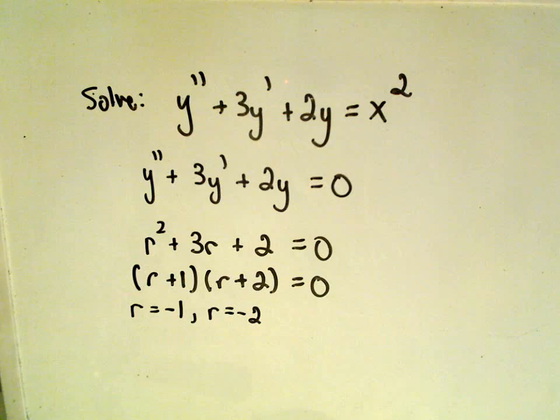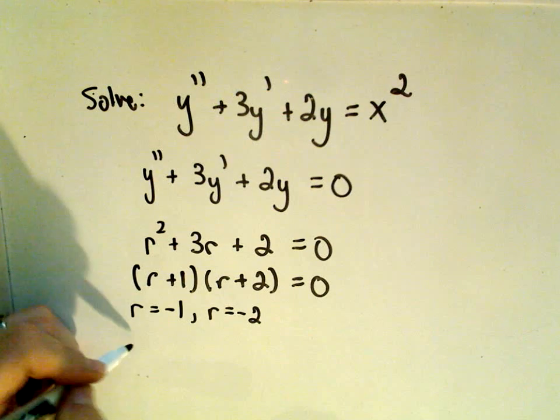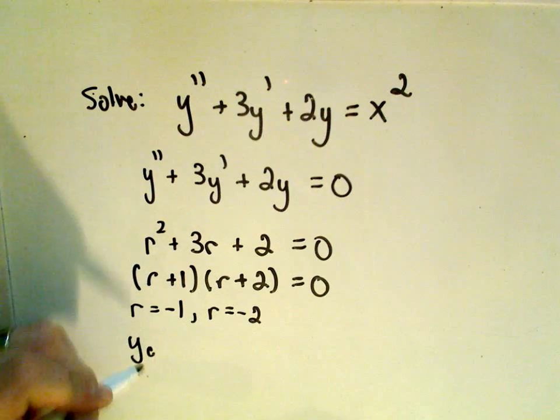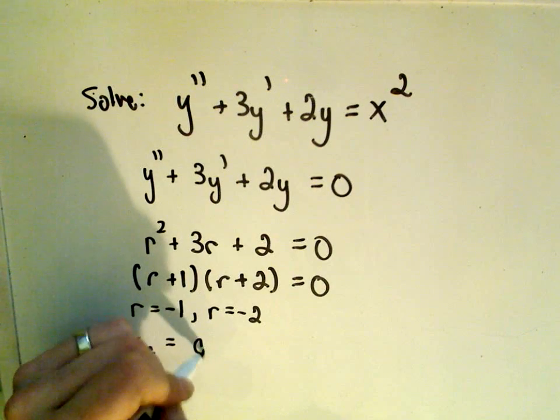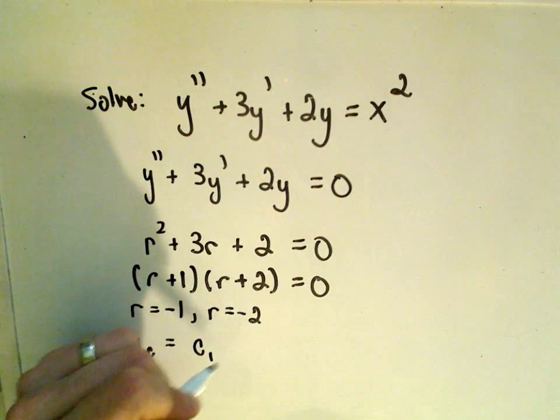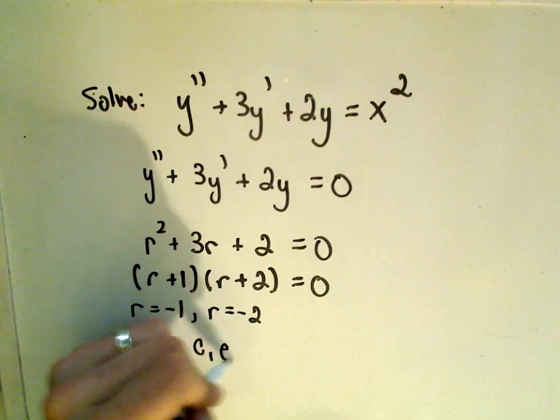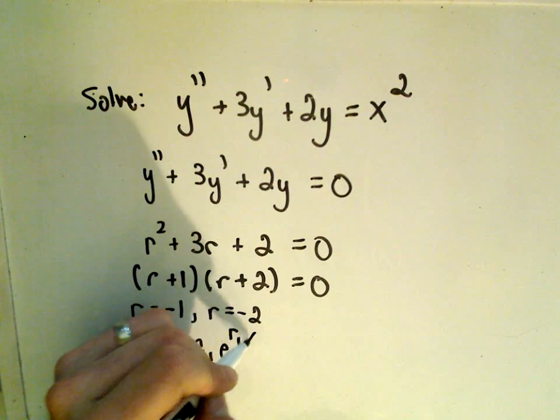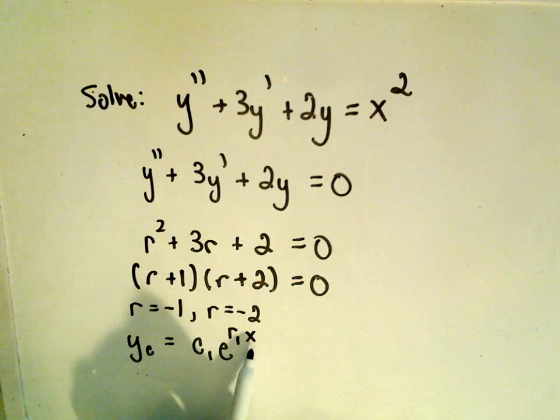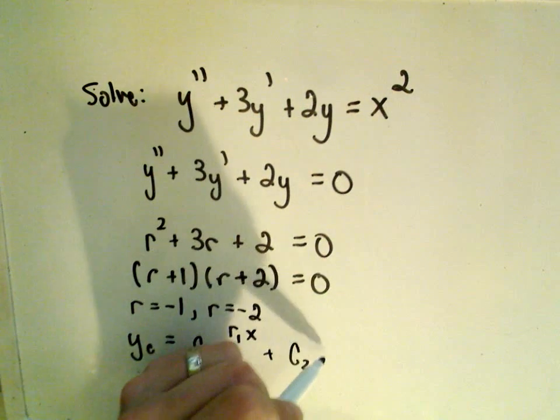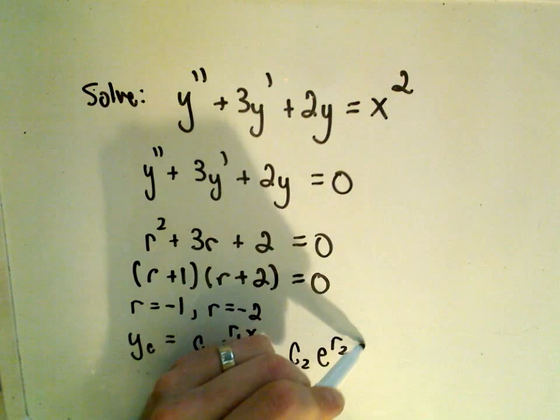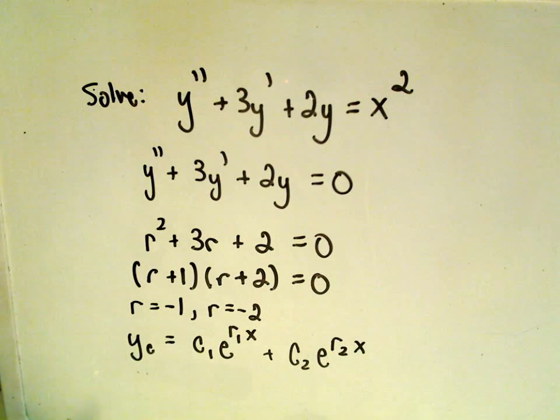So this is a case where we have two distinct real roots. And remember, if you have two distinct real roots, it says basically your solution is going to look something like, there's going to be some coefficient, e to the first root, it doesn't matter which one, so one of the roots times x, plus again this coefficient, c2, e to the second root times x.